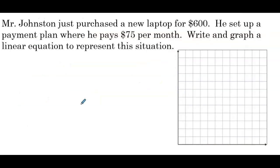Mr. Johnson just purchased a new laptop for $600. He set up a payment plan where he pays $75 per month. Write and graph a linear equation to represent the situation. Okay, so I'm going to let m be the number of months. Okay, so we need to define our slope, which again is m. So I'm writing it just as slope so we don't have a conflict here. And then we need our b value for our equation. Okay, so what's our fixed value in this problem? The fixed value is the cost of the laptop. That's not changing. That's going to be $600. And then he's paying $75 per month. So he's decreasing what he owes by $75 each month that passes. So the slope would be negative 75.